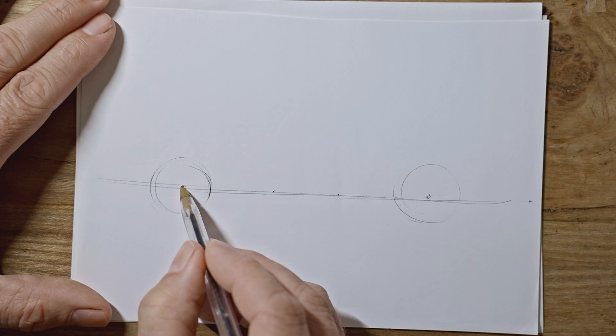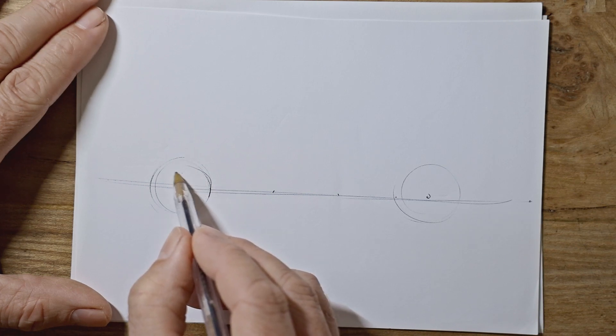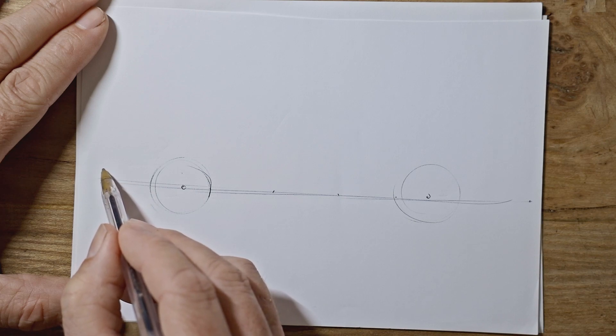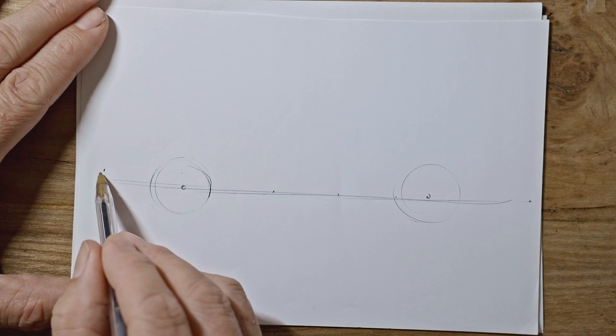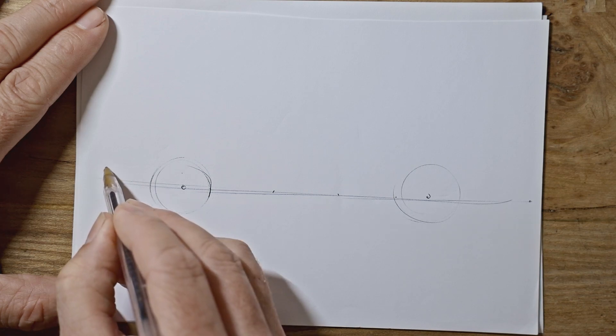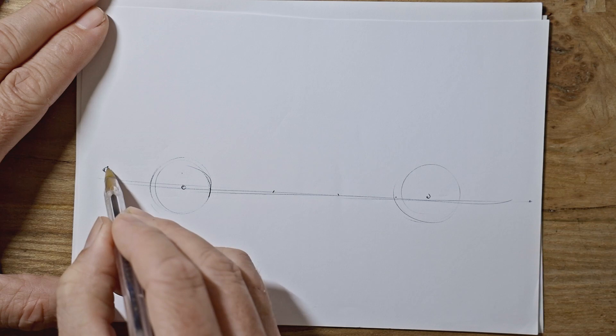And if you come to the front wheel halfway between the top and the middle, this point here, and then go forward so that you're three quarters of a wheel further forward than the front wheel, so three quarters of a wheel there. That's going to be your furthest forward part, the front bumper.